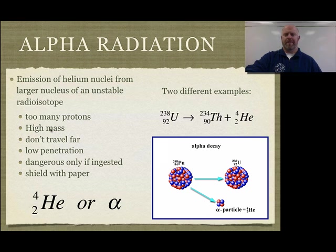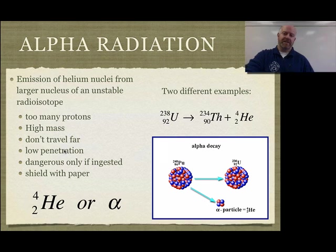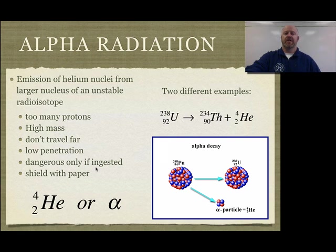The alpha particles have a really high mass, with a mass number of four being emitted. As a result, they don't travel very fast, they don't travel very far, so we have a low penetration. We can shield them very easily using simple things. Alpha radiation is very common and really is only dangerous to us if we ingest the alpha radiating particles.